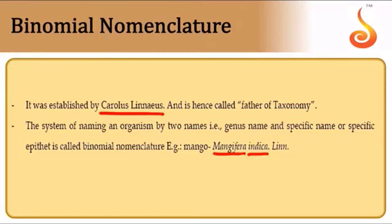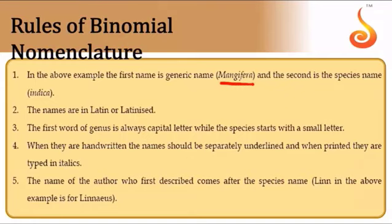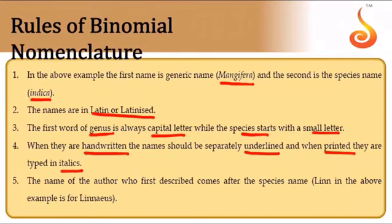Linnaeus gave two names to each organism: the genus name and the specific name — hence the term binomial nomenclature. The name of the author who first described the organism is also affixed to the scientific name. Rules of binomial nomenclature: both names must be Latinized; the genus name starts with a capital letter; the species name starts with a small letter; it should be underlined when handwritten and italicized when printed. The genus, specific, and author's abbreviated name together form the binomial epithet.